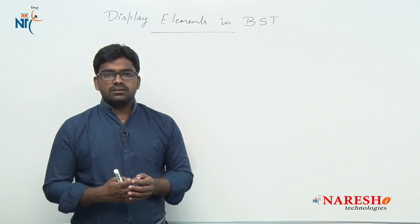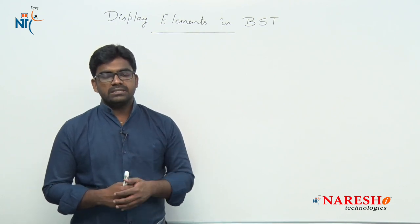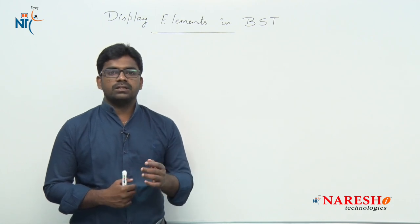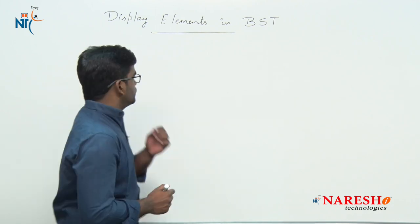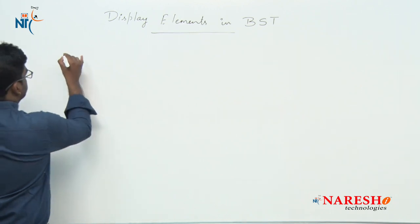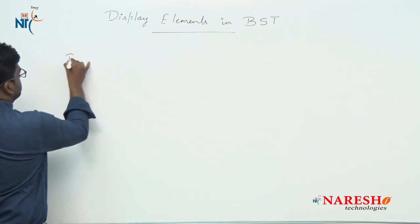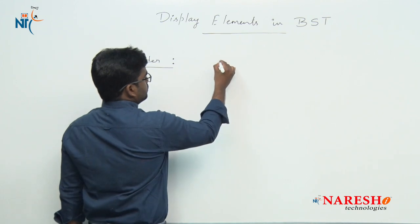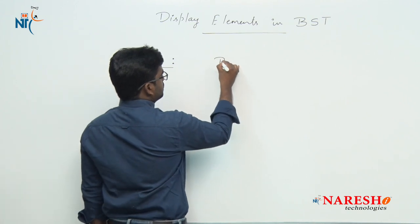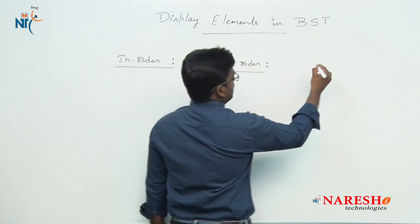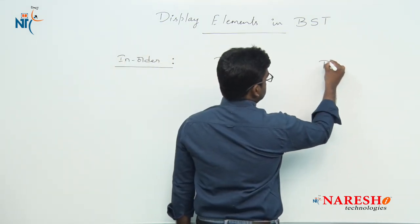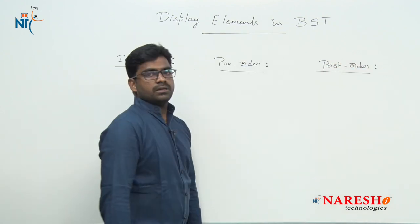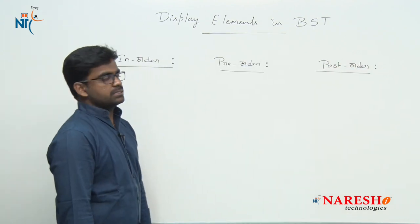After constructing a binary search tree, if you want to display elements, there are three ways. The first is in-order traversal, the second is pre-order traversal, and the third is post-order traversal.